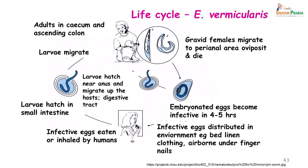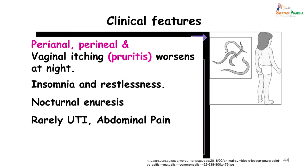The clinical features are perianal, perineal, and sometimes vaginal itching which worsens at night. The child may have insomnia, restlessness, and very often nocturnal enuresis. Rarely the child may present with urinary tract infection or abdominal pain. I keep referring to a child — this can also cause infection in adults, but in children it is more common.